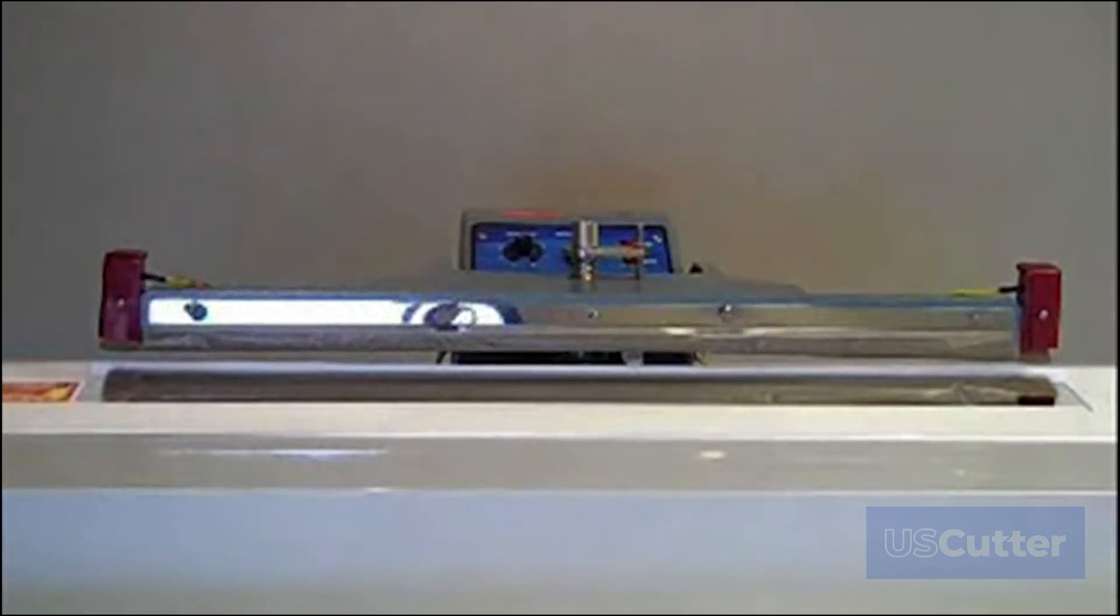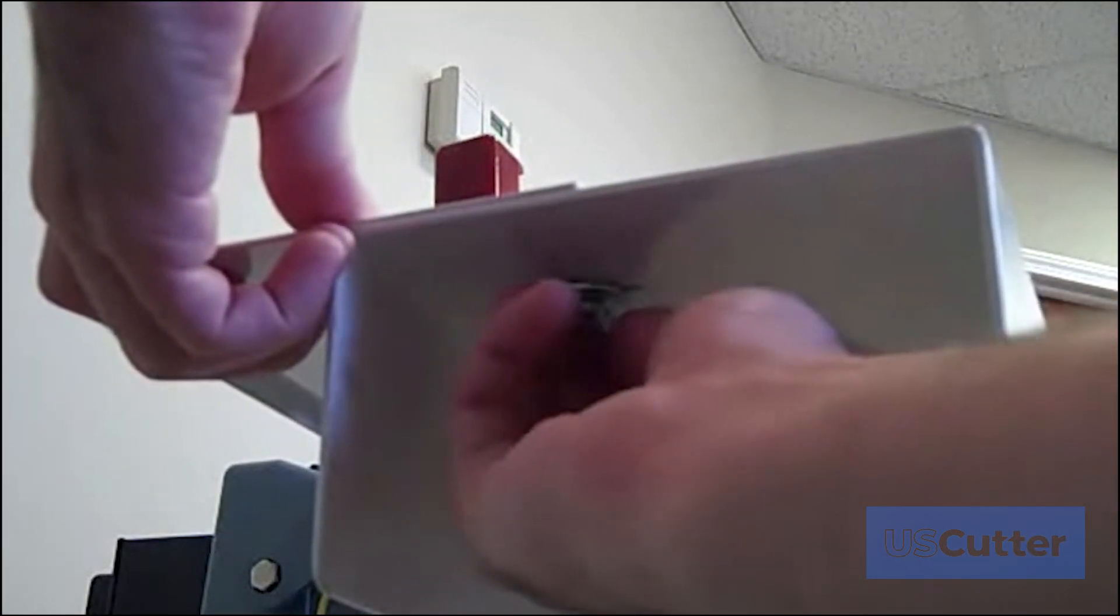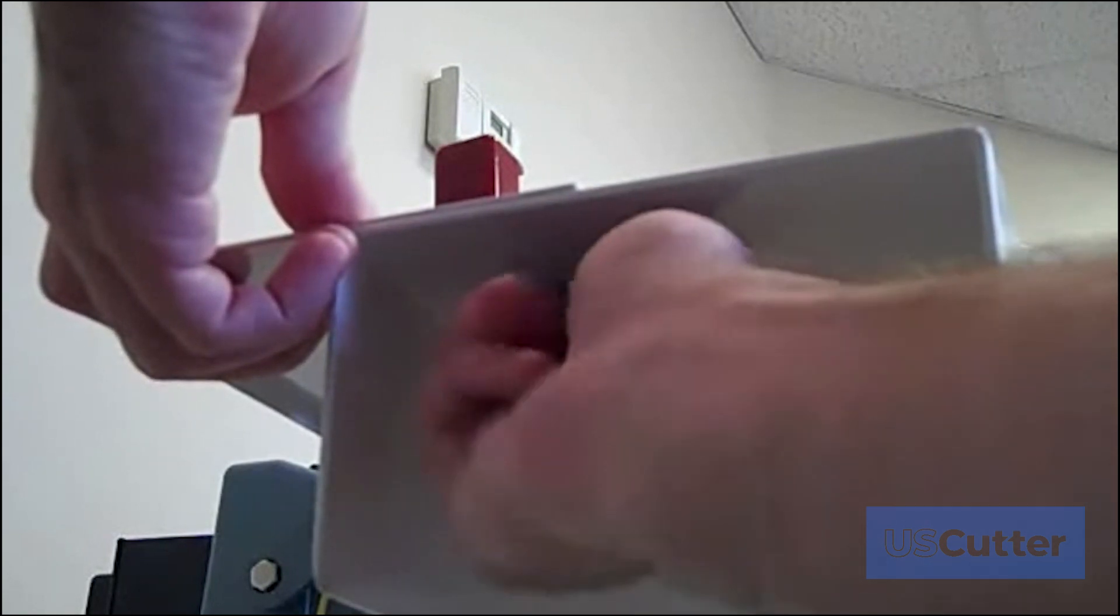The Banner Pro features an alignment bar, secured by two wing nuts, which can easily be adjusted for hemming or for the creation of pole pockets or pocket signs. Simply slide the alignment bar into position and secure it with the wing nuts under the tray.